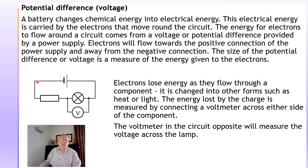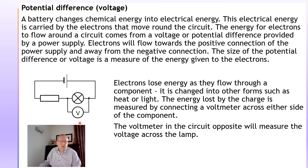The voltage is a measure of the energy given to the electrons. In the circuit, the electrons will lose that energy as they flow through the wires and components — in this case the resistor and the lamp. Focusing on the lamp, the energy the electrons have is converted into heat and light. The voltmeter measures the voltage or potential difference across the lamp, which is a measure of the energy lost by the charges. If we put another voltmeter across the resistor, the voltage across the resistor plus the voltage across the lamp equals the energy supplied.